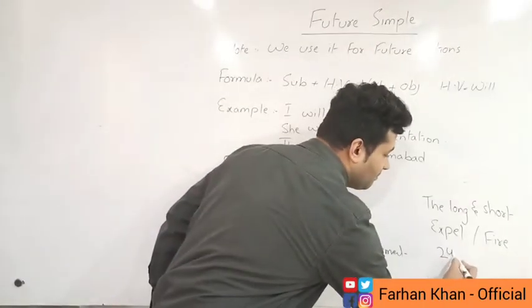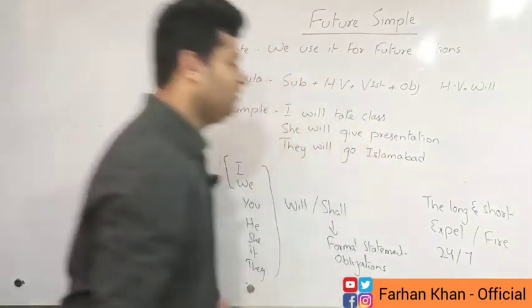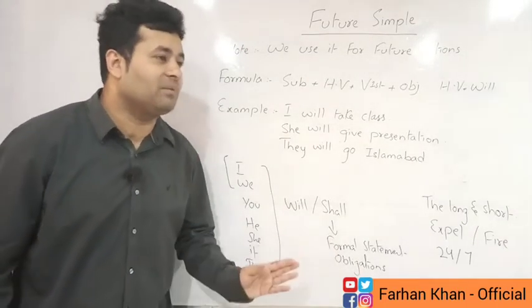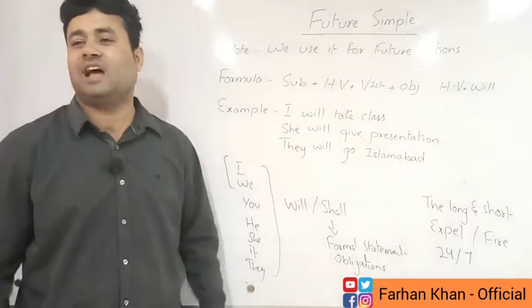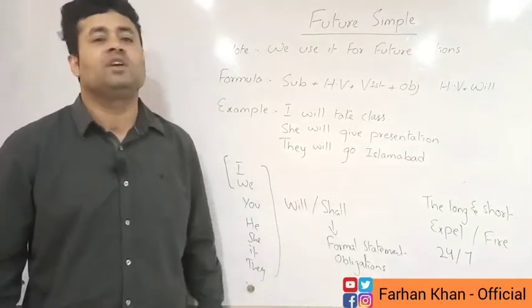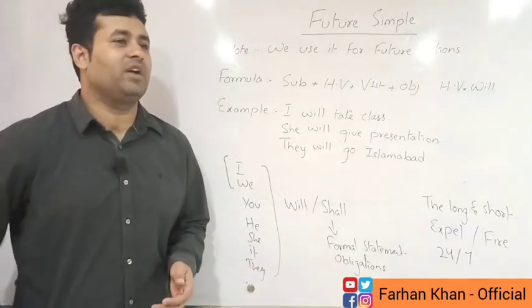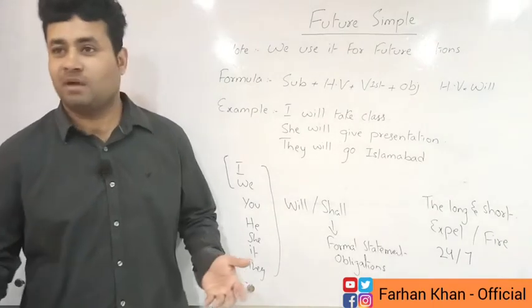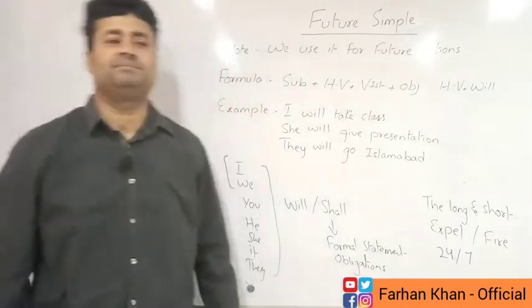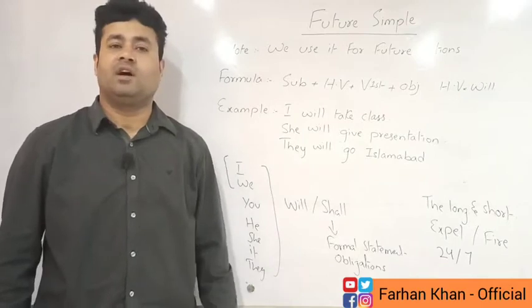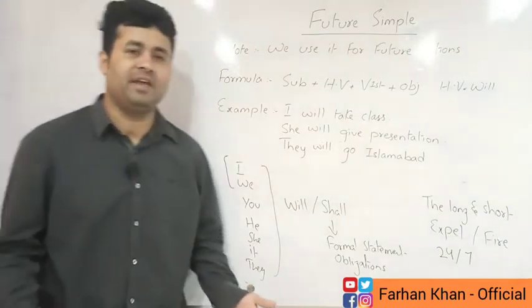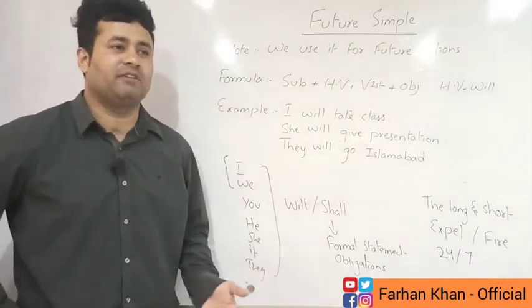Another example of American vocabulary: '24-7.' What does it mean? 24 means twenty-four hours, and 7 means seven days. So '24-7' means every time, always. For example: '24-7 I speak English' or 'This shop is open 24-7.'